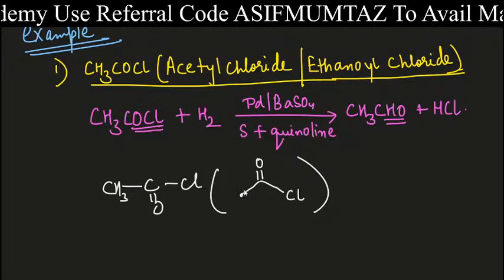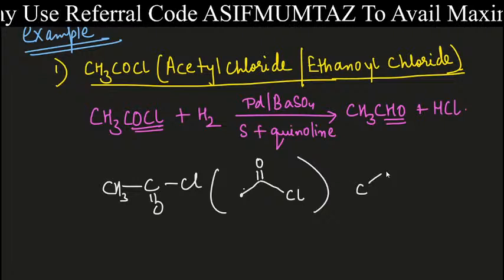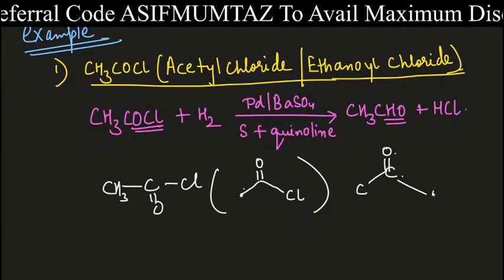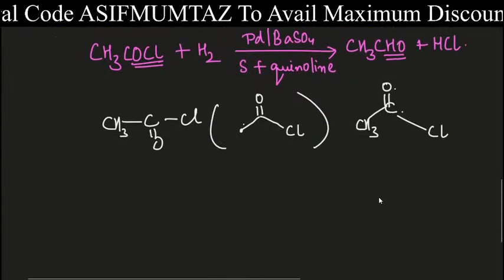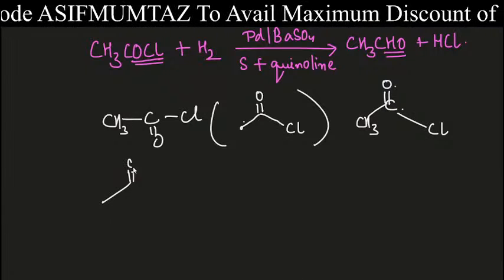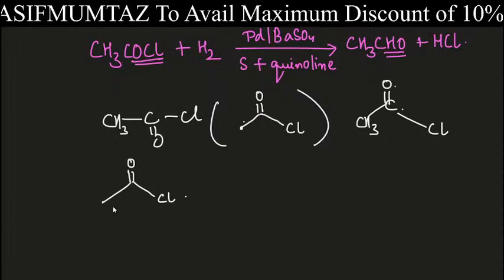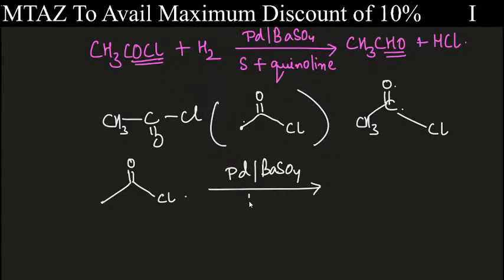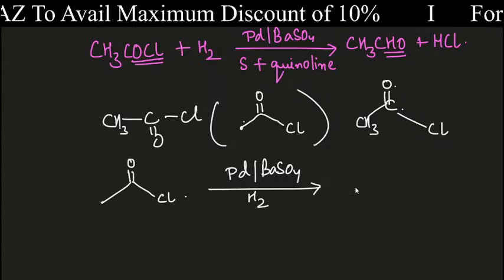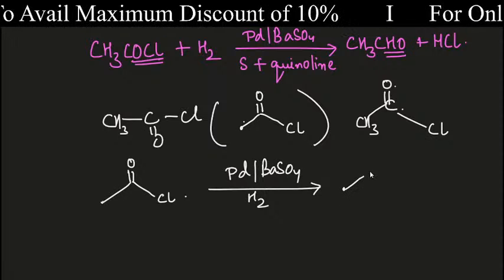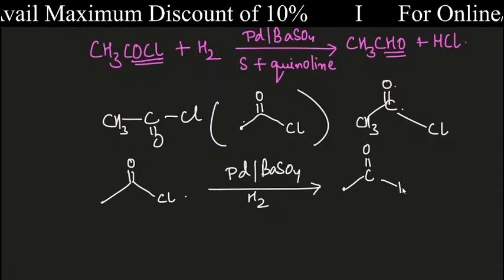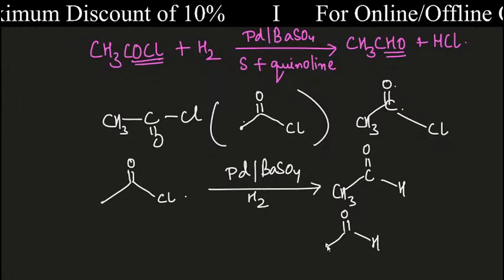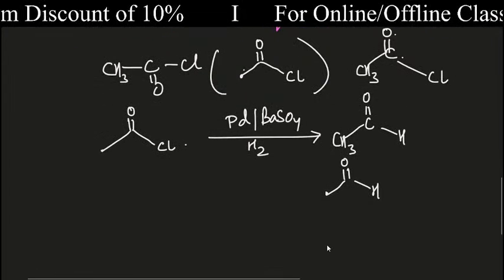In many books this compound is represented structurally: carbon with C double bond O, with CL and CH₃. This is CH₃COCl. This is how it appears in NEET exams. With PdBaSO₄ in presence of hydrogen, and sulfur plus quinoline, what is forming? CHO with CH₃ — that is, CH₃CHO which is acetaldehyde.